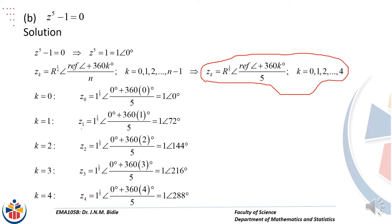What is important here is to get the formula right. The value for n is the power of z, and the values for k always start from 0 to n minus 1.